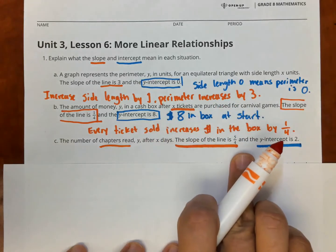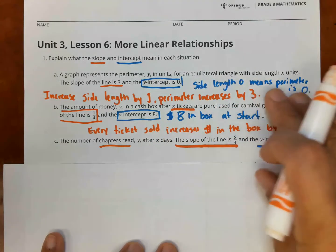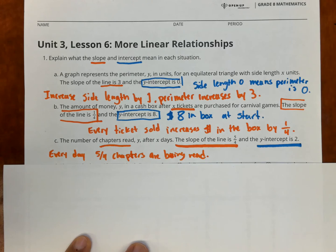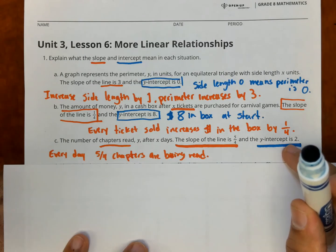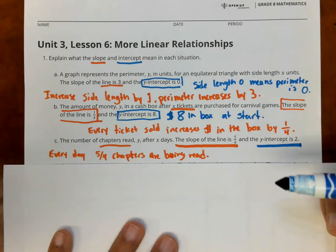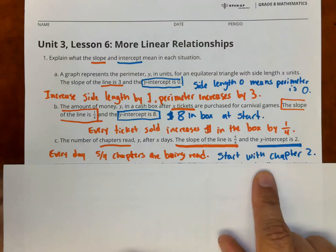That's what that means here. That's what the slope means. The slope of the line is 5 over 4. Every day, 5 over 4 chapters are being read. Now, the y-intercept is 2. The y-intercept being 2, that's where they start from. So that means that they start reading at chapter 2. So that's what that means there. The y-intercept starts with chapter 2.